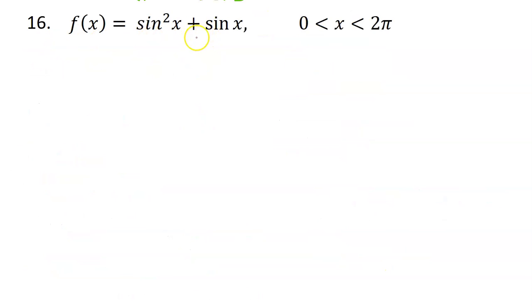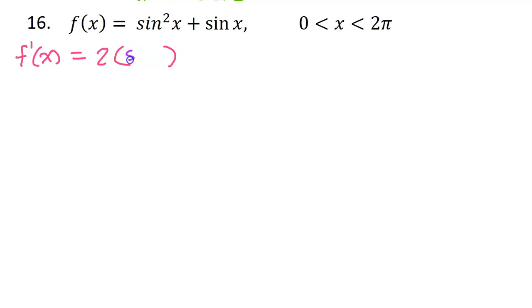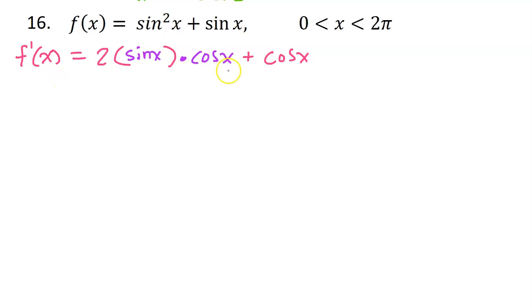Let's do one more, again with a trig function. We will start by finding the derivative. We have to use the chain rule because the squared part is the outer function — bringing that to the front leaves sine x as the inner function. The chain rule says we multiply by the derivative of that inner function, which is cosine. Then for the second term, the derivative of sine is also cosine. So this is the derivative.